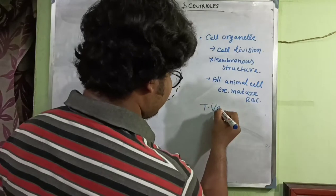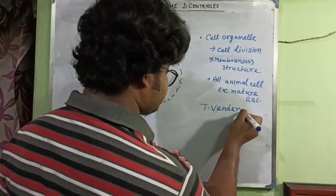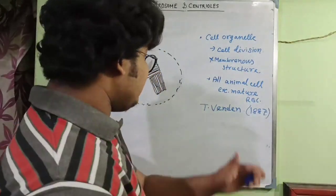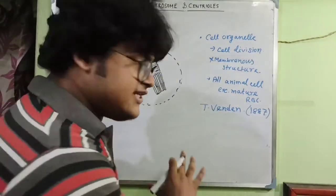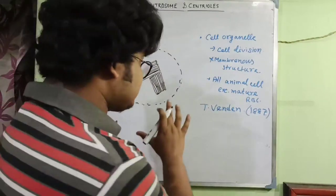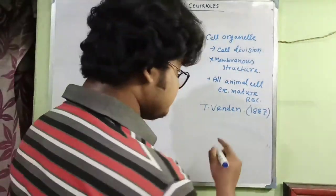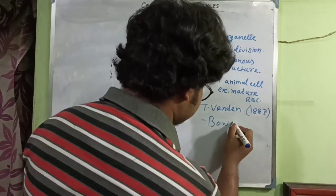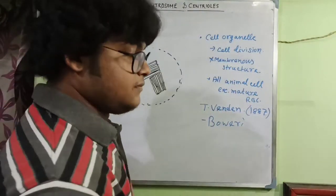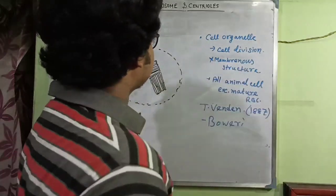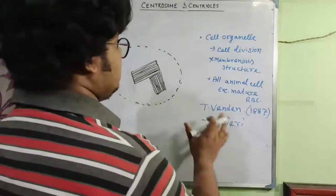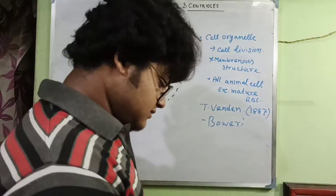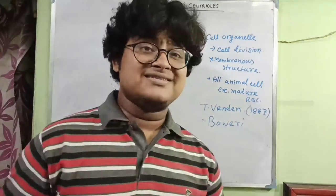This cell organelle was first discovered by van Benden in 1887, and the structure of the centrosome was described by Boveri. So this is the background of the centrosome. Now let's look at what the structure of the centrosome is.